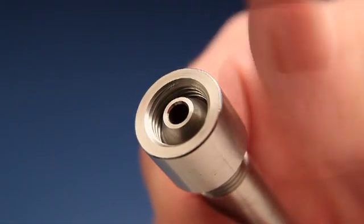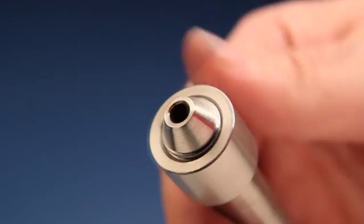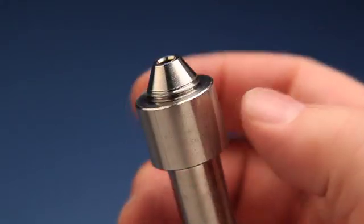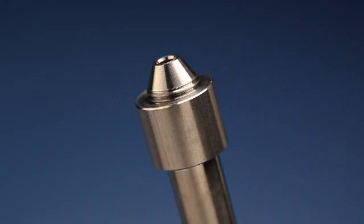Next, put the collar, which is reverse threaded, onto the tube. Turn it counter-clockwise until there are only one or two threads left exposed at the coned end.